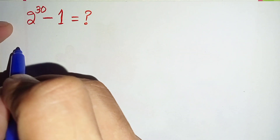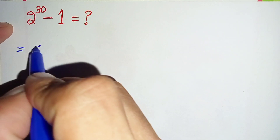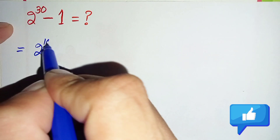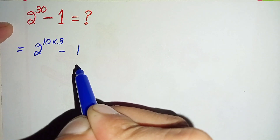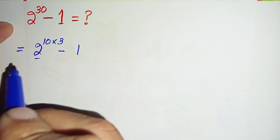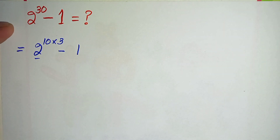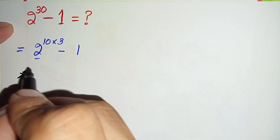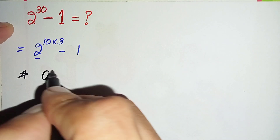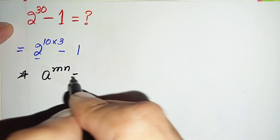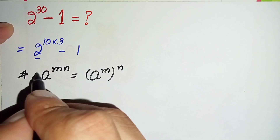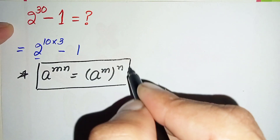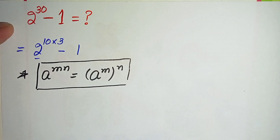First, we will factorize the power 30 as 10 times 3. So we can write 2 raised to power 30 as 2 raised to power (10 times 3) minus 1. Now in this term, 2 raised to power 10 times 3, we will use an exponential math property: a raised to power m times n can also be written as a raised to power m, whole raised to power n.